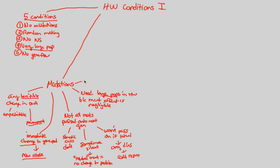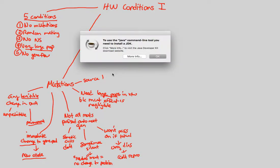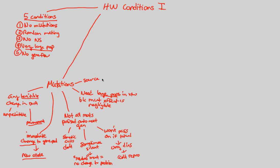Overall, mutations are generally considered the source of genetic variation altogether — the source of genetic variation. That is an important idea behind mutations. We know that in Hardy-Weinberg we don't want them, and the reason is the change in gene frequency and allele frequency that ensues if you have mutations.